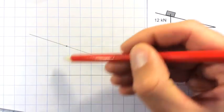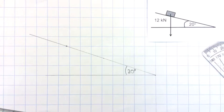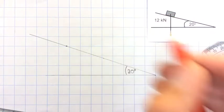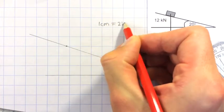And again, I need a scale. And so that it will fit onto my sheet, I am going to choose 1 cm equals 2 kN.